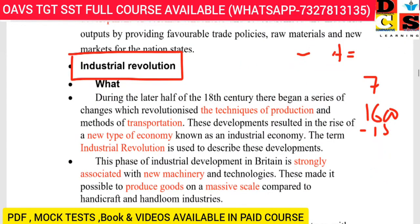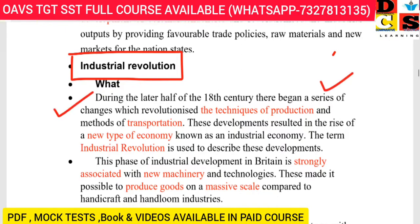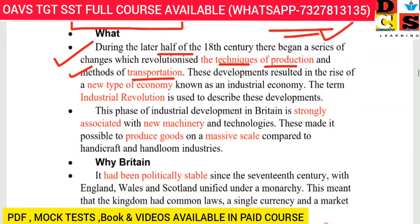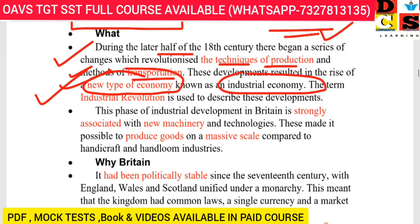Industrial Revolution: during the latter half of the 18th century — that is 1750 to 1799 — there began a series of changes that revolutionized the techniques of production and methods of transportation. This development resulted in a new type of economy. This is the Industrial Revolution.